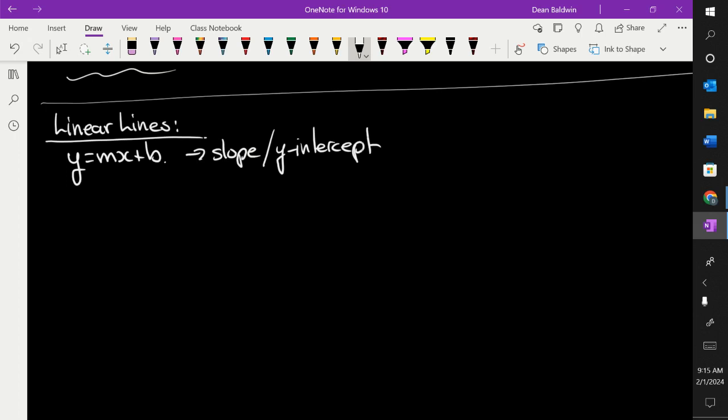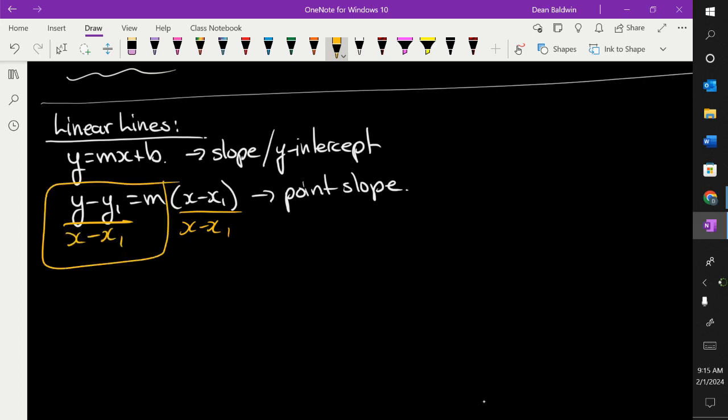There's point slope. Point slope is this. And this one, this formula right here, just comes from the formula for slope. Because if you divide off x minus x1, you get the formula for slope. That's how they get that.